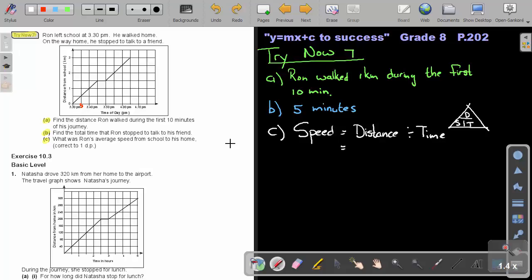So basically the distance, look, from zero to three. So the distance is three kilometers. Remember, I want the answer in kilometers per hour.